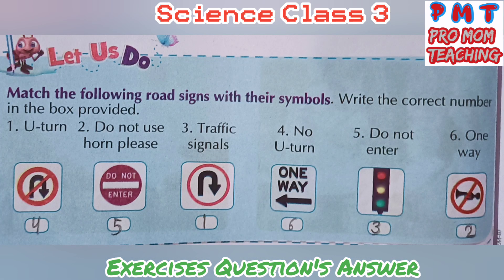Match the following road signs with their symbols. First symbol is no U-turn. Next, do not enter. Next, U-turn. Next, one way. Next, traffic signals. And the last one is do not use horn please.